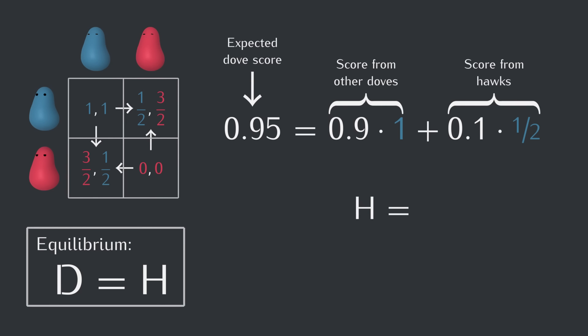Okay, just like before, the rest of the population is 90% doves, and against a dove, a hawk gets one and a half or three halves pieces of food. And again, there's a 10% chance of running into another hawk, in which case our hawk goes home with zero food.